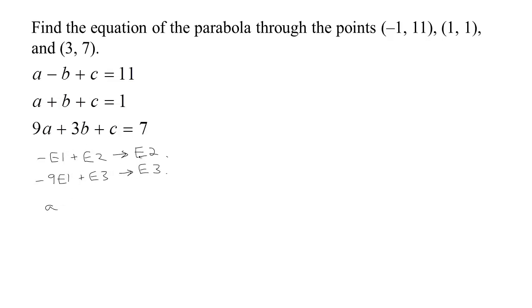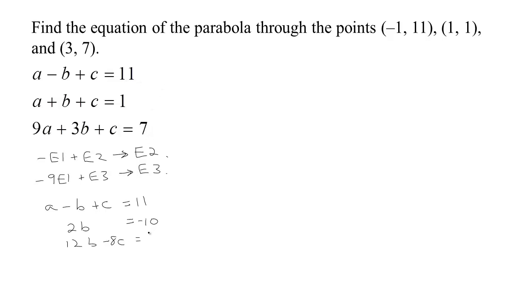The only equations I'm changing are equation two and equation three — equation one stays as a minus b plus c equals 11. For the new equation two, subtracting equation one from equation two: a minus a is zero, b minus negative b is 2b, c minus c is zero, and 1 minus 11 is negative 10, giving 2b equals negative 10. For the new equation three, taking negative nine times equation one and adding to equation three: negative 9a plus 9a is zero, negative 9 times negative b is positive 9b plus 3b makes 12b, negative 9c plus c makes negative 8c, and negative 9 times 11 is negative 99 plus 7 is negative 92.